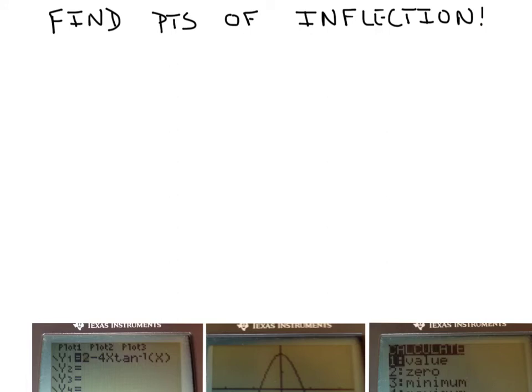Our last one tonight: we're going to find points of inflection — where this curve changes concavity. The function is arctan(x) all squared — it's not just x that's being squared, it's the entire arctan(x) being squared. We'll use the calculator a lot here. My game plan is to find the second derivative, set it equal to 0 to get critical points, then construct a sign chart to confirm that the second derivative changes signs, confirming points of inflection.